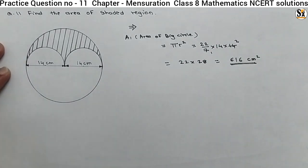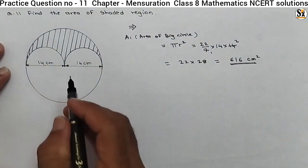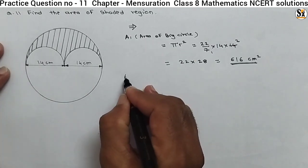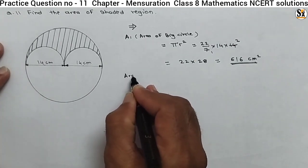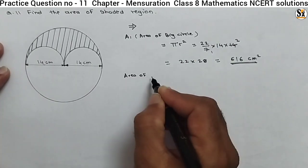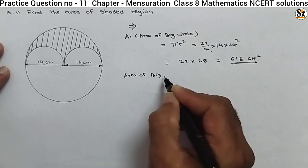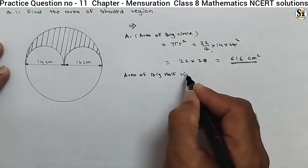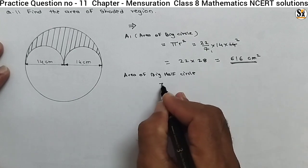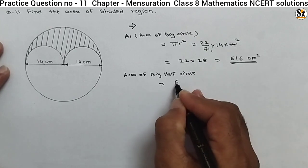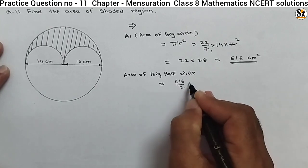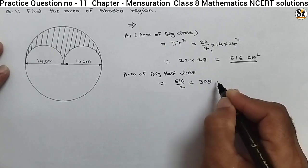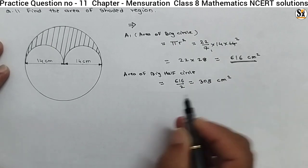Now, the area of the big half circle. We must take only half. So the area of the big half circle will be equal to 616 divided by 2, that is 308 centimeter squared.